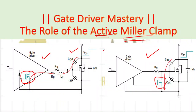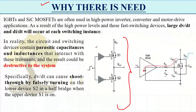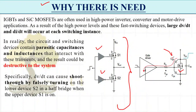Now let's understand the background — why there is a need for the active miller clamp circuit. Consider a half-bridge or full-bridge configuration where two switches are connected, with PWM pulses going to both switches via gate drivers. Every switching device has its own parasitic inductances and capacitances: Cgd, Cgs, and Cds — known respectively as input capacitance, output capacitance, and reverse recovery capacitance. Cgd is specifically called the miller capacitance.